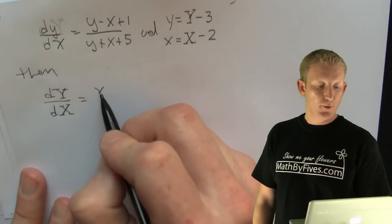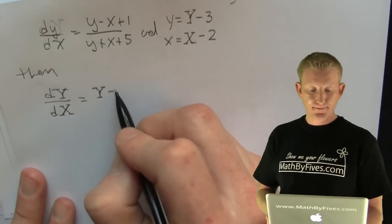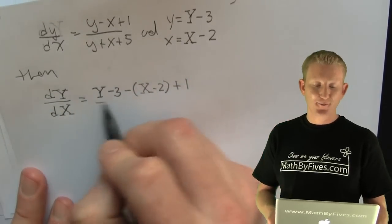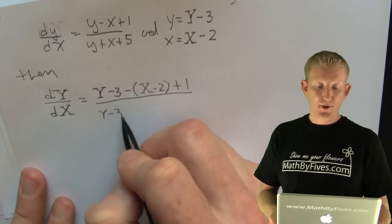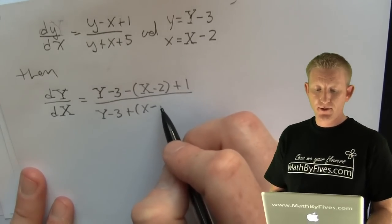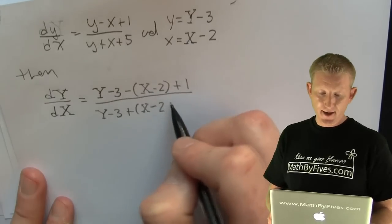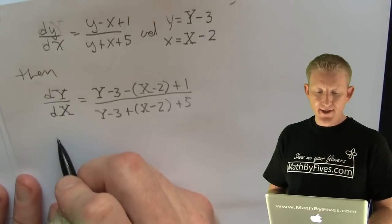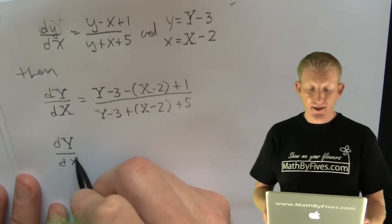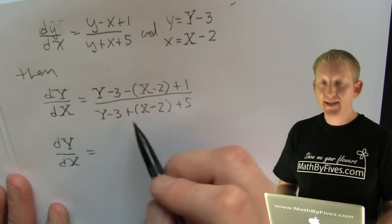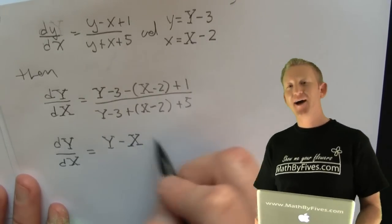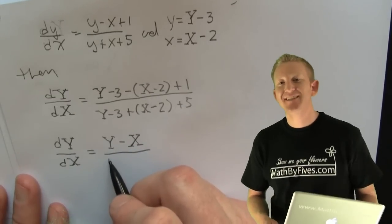So now everywhere he sees a y, he puts a y minus 3. And everywhere he sees an x, he puts an x minus 2. And he uses parentheses. Everywhere he sees a y, he puts a y minus 3. Everywhere he sees an x, he puts an x minus 2. And hey, wait, when you clean that up, in the numerator I see 3 plus minus 3 plus 3 making no 3, additive inverses. And in the denominator I see minus 5 plus 5, making additive inverses. So after the dust settles, what does he have left? That differential equation that he did know the solution for.